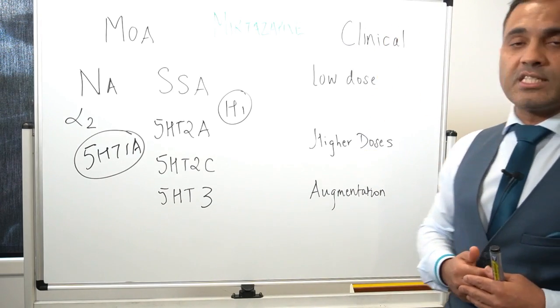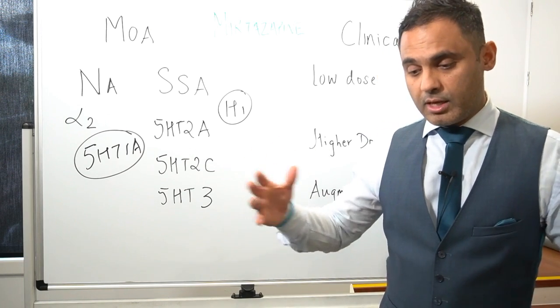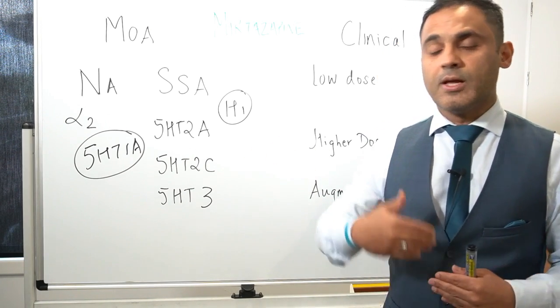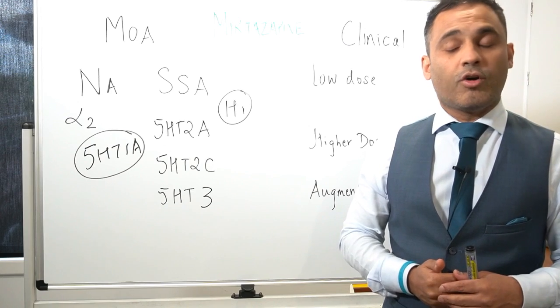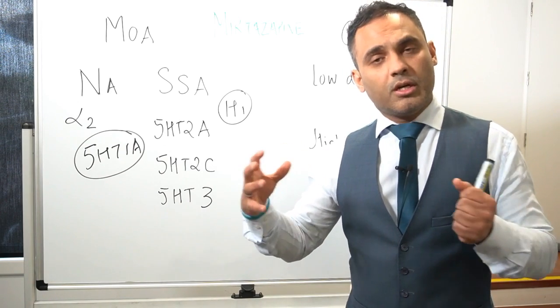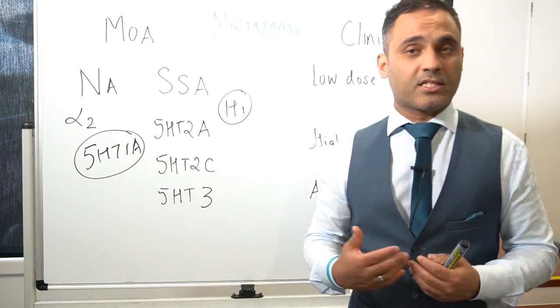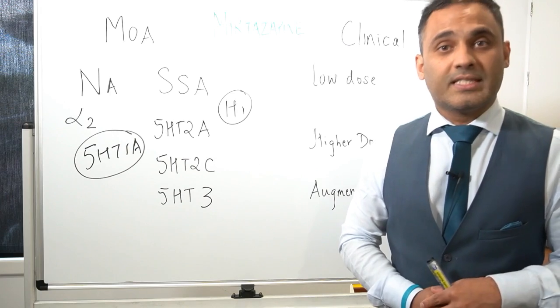Mirtazapine can be successfully augmented as well. So essentially, how do I start mirtazapine? I will start mirtazapine at 15 milligrams at nighttime. So in a patient with depression, 15 milligrams, and weekly increases of approximately 15 milligrams can be considered with the right framework. In an inpatient setting, I can do it faster than in the outpatient setting.